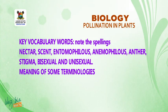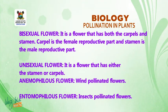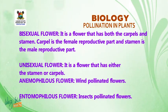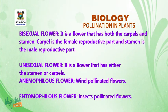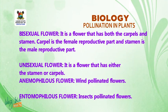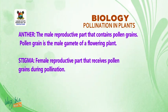Meaning of some terminologies. A bisexual flower is a flower that has both the carpels and stamens. Carpels are the female reproductive part; stamens are the male reproductive part. A unisexual flower is a flower that has either the stamens or carpels. An anemophilous flower is another name for a wind-pollinated flower. An entomophilous flower is another name for an insect-pollinated flower. The anther is the male reproductive part that contains pollen grains.